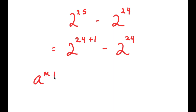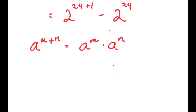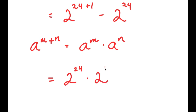Now I can use the property: a to the power of m plus n is equal to a to the power of m times a to the power of n. So 2 to the power of 24 plus 1 turns into 2 to the power of 24 times 2 to the power of 1, and I still have this minus 2 to the power of 24.